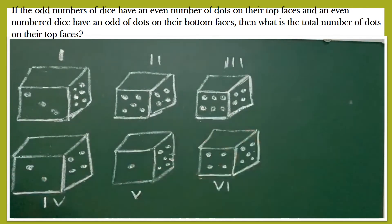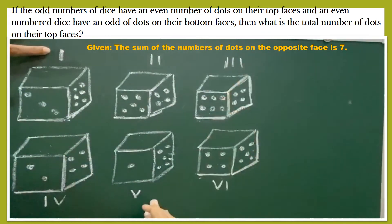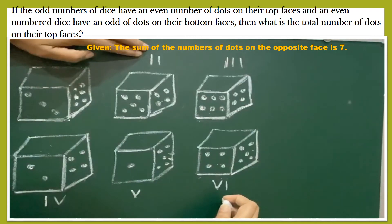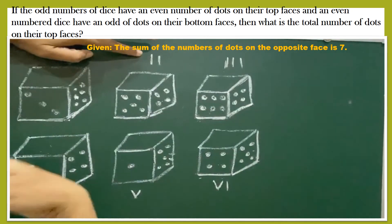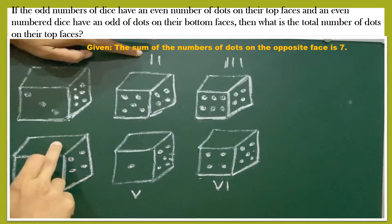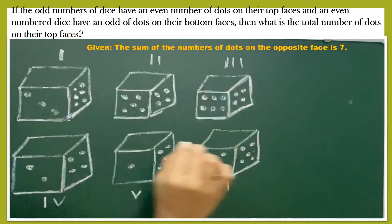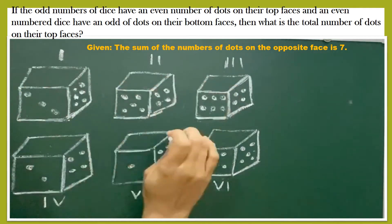6 dice are given and the sum of opposite faces is 7. It's given that in the odd-numbered dice — that is 1, 3, and 5 — the number of dots at the top face is even. And for the even-numbered dice — that is 2, 4, 6 — there are odd number of dots at the bottom, which means even number of dots at the top. So all top faces have even number of dots. Now let's find how many even dots come on top for each die and total them up.